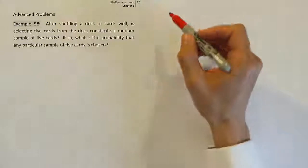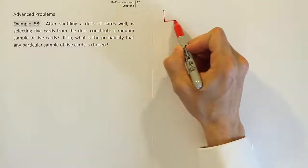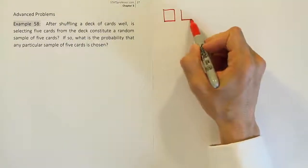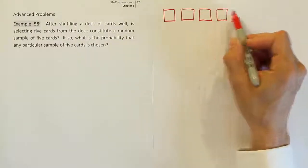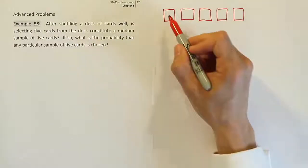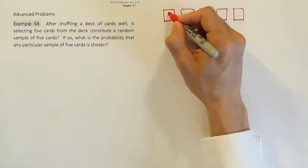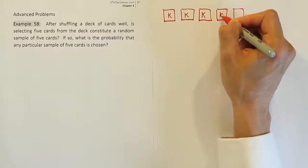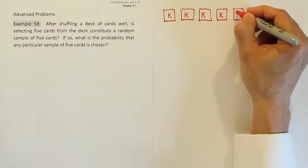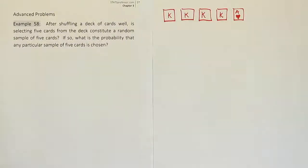So let's just make up one, just so we have something to think about. If I have five cards being chosen, it could be any five cards, but they're saying a particular five card hand. For example, you could have four kings and maybe the ace of hearts. So that could be a five card hand.